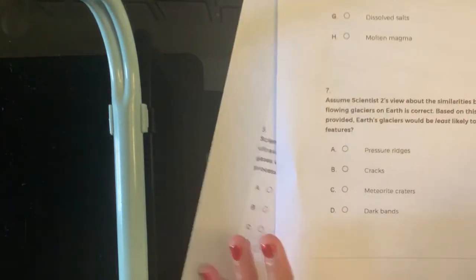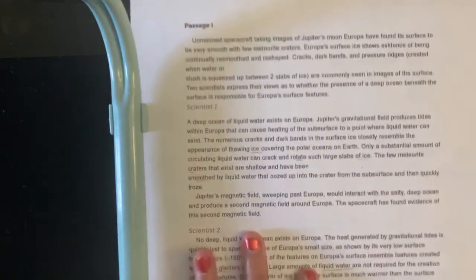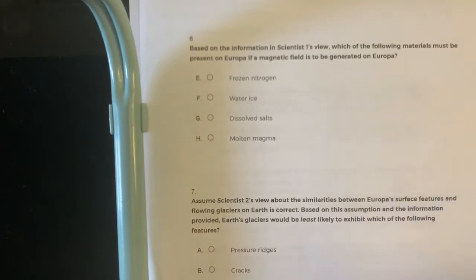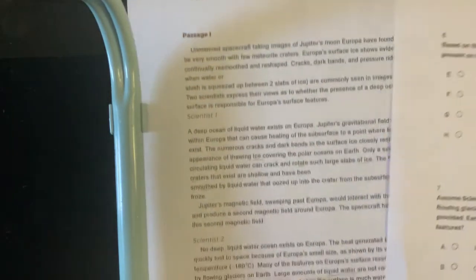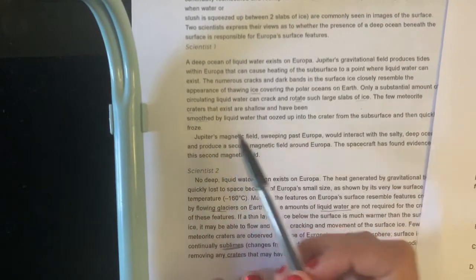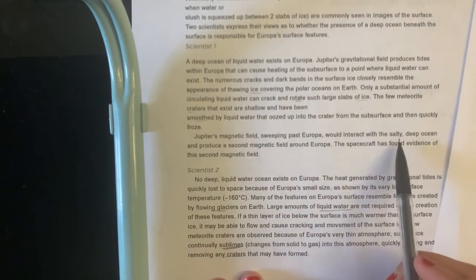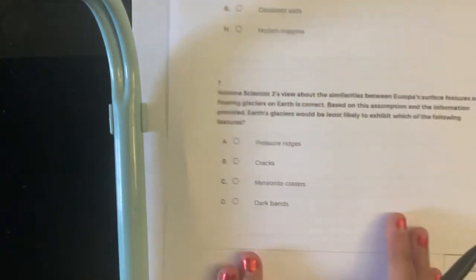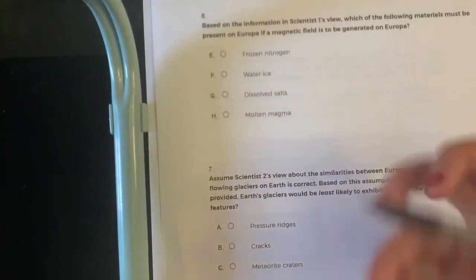So moving on to the last two questions. Again, I know I am going fast, but you will need to go this fast on the day of the test, as ACT science goes very, very quickly. Based on the information in Scientist 1's view, which of the following materials must be present on Europa if a magnetic field is to be generated on Europa? So we're talking about the magnetic field. Here's the magnetic field of Jupiter. Jupiter's magnetic field moving past Europa would interact with the salty deep ocean. Okay, so we need a salty deep ocean. So I would say we need dissolved salts.